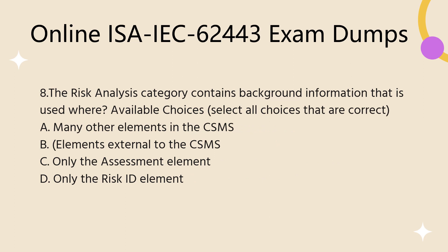Question 8. The risk analysis category contains background information that is used where? Select all choices that are correct. A. Many other elements in the CSMS. B. Elements external to the CSMS. C. Only the assessment element. D. Only the risk ID element.